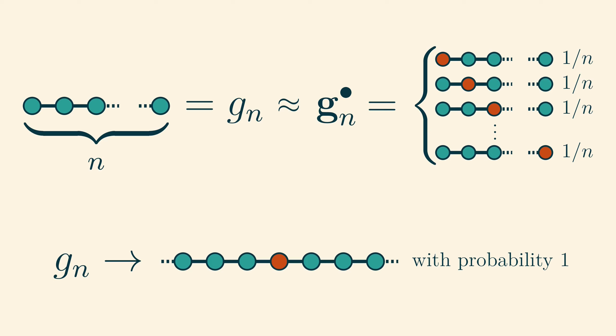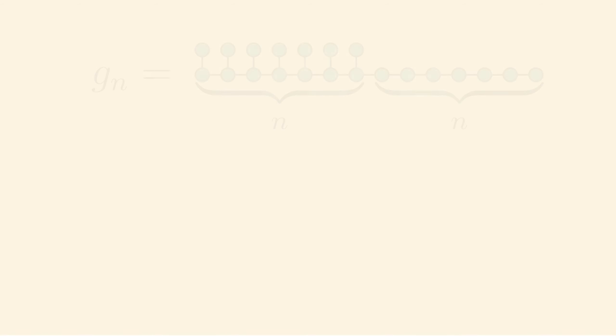So, the limit of a sequence of fixed unrooted graphs turns out to be a random rooted graph. In this case, its distribution happens to be concentrated on a single graph, but this does not always happen.